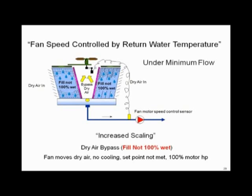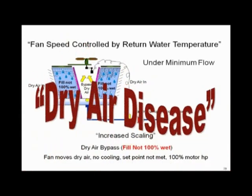Dry air finds the path of least resistance through the dry fill sections, where there's very little air resistance. Where the fill is wet, there's real air resistance because you're trying to evaporate a pound of water every 15,000 BTUs. But where it's dry, that dry air passes right through the tower and the fans suck it straight out the top. The condenser water temperature can't be maintained at 85°F, so the fans run faster and faster — these towers have 'dry air disease' and they aren't working.